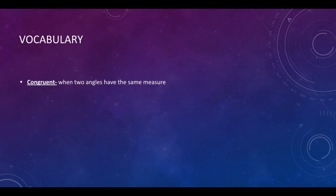So we have vocabulary. Congruent is any time you have something that is the same or equal. So two angles that have the same measurement are congruent. Again, congruent is just another word for equal in math.